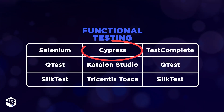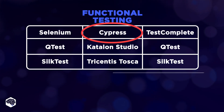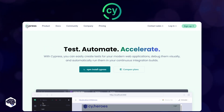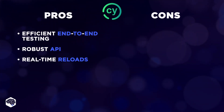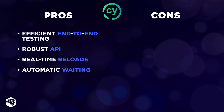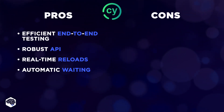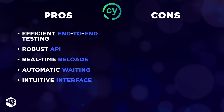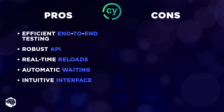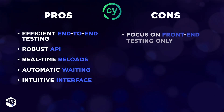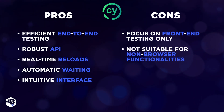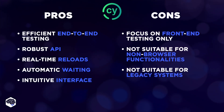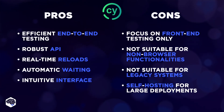Another potent alternative is Cypress — a powerful option for automated functional testing. Its built-in capabilities for end-to-end testing, including a powerful API, real-time reloads, and automatic waiting, streamline the testing process and enhance developer productivity. Cypress also provides a clear and intuitive interface that simplifies writing, debugging, and maintaining tests. However, it's primarily focused on front-end testing and may not be suitable for non-browser functionalities or legacy systems. Since Cypress is free and open source, self-hosting for large deployments is required.